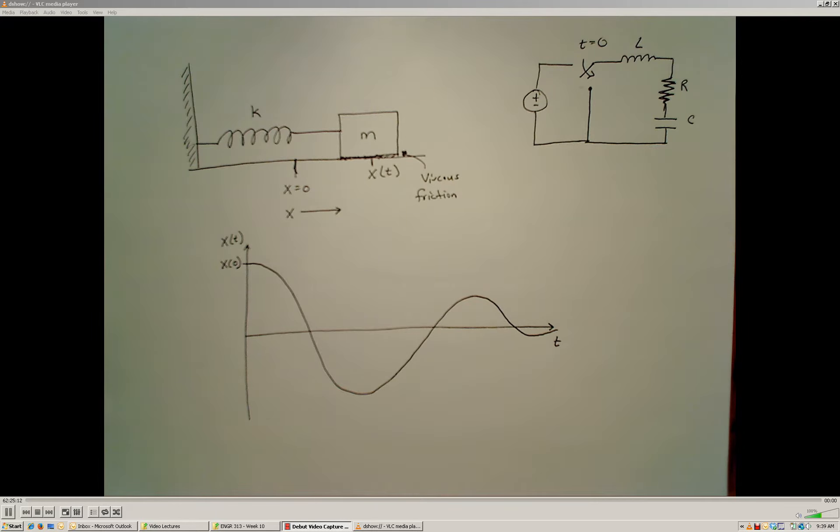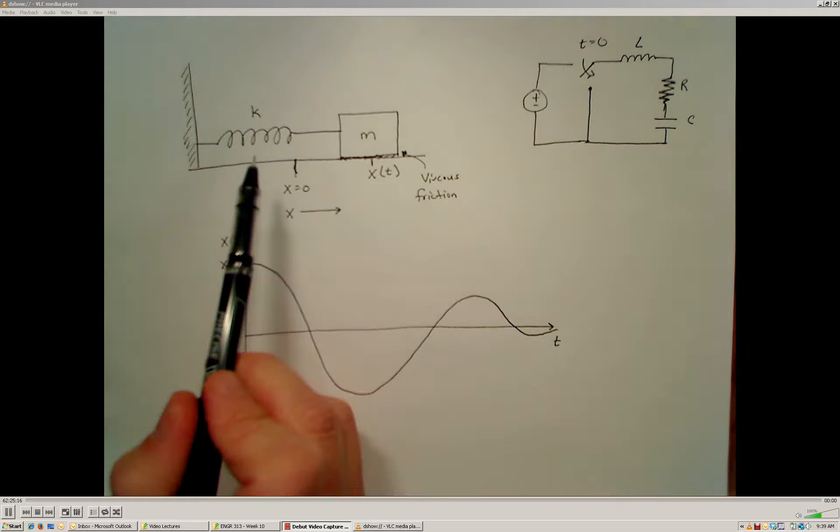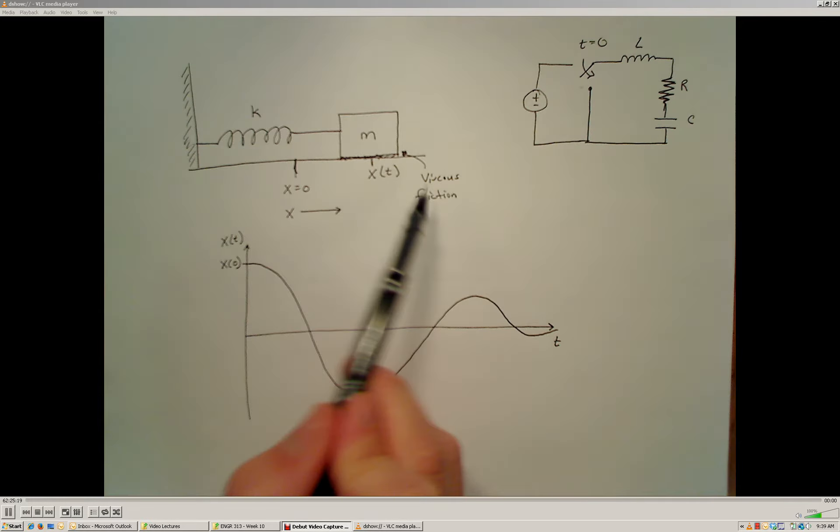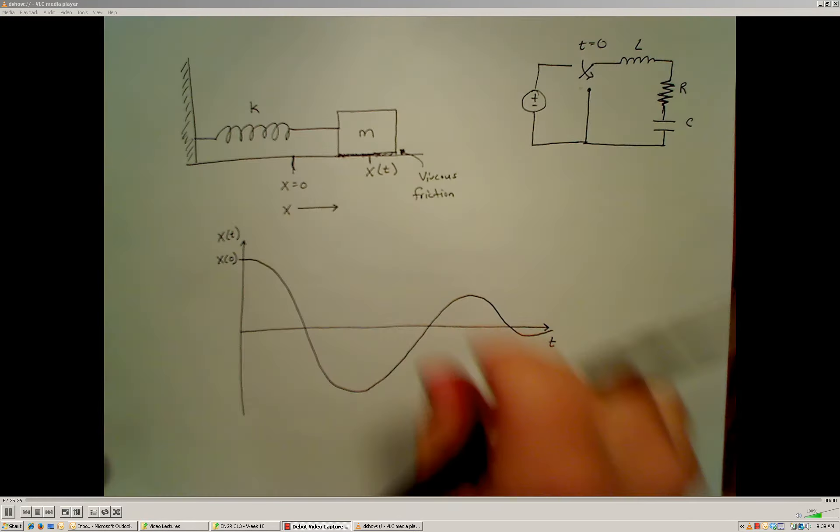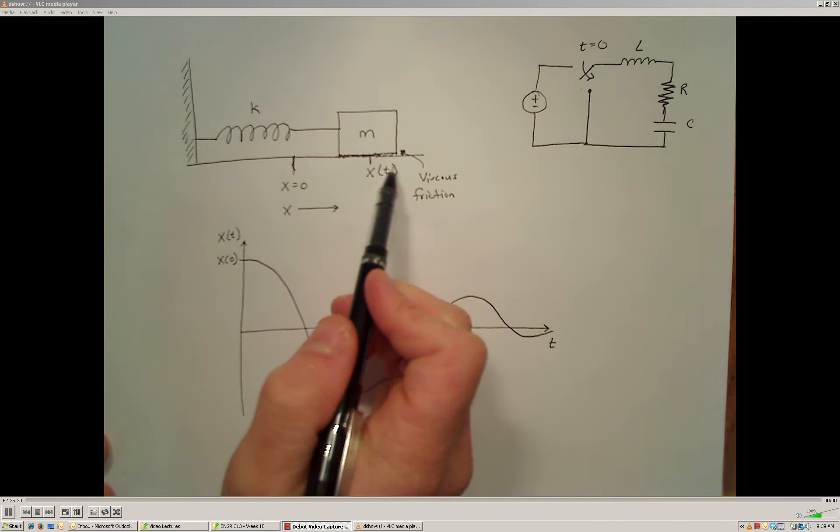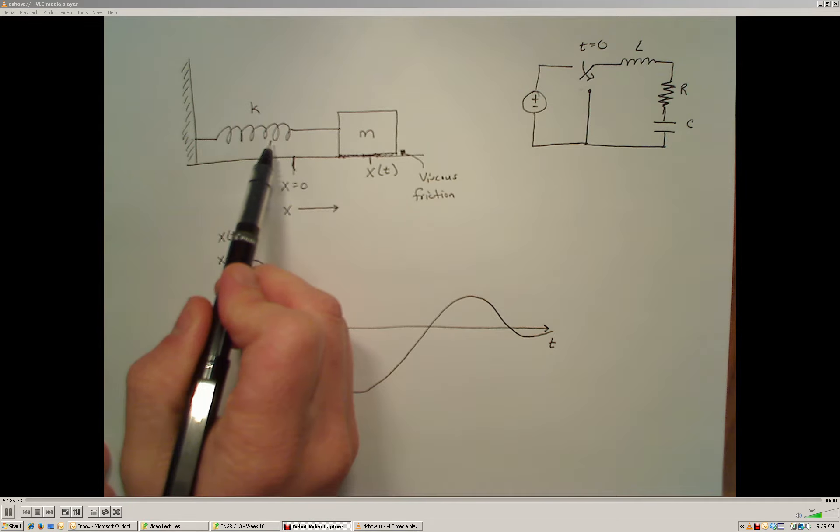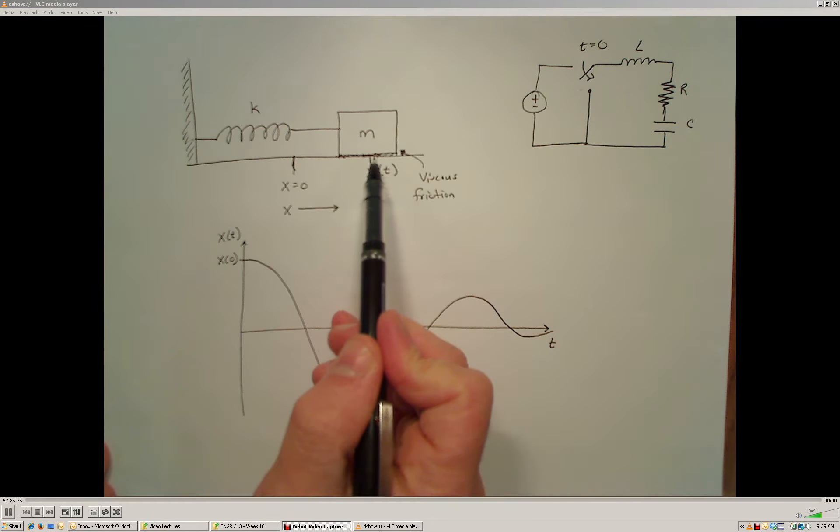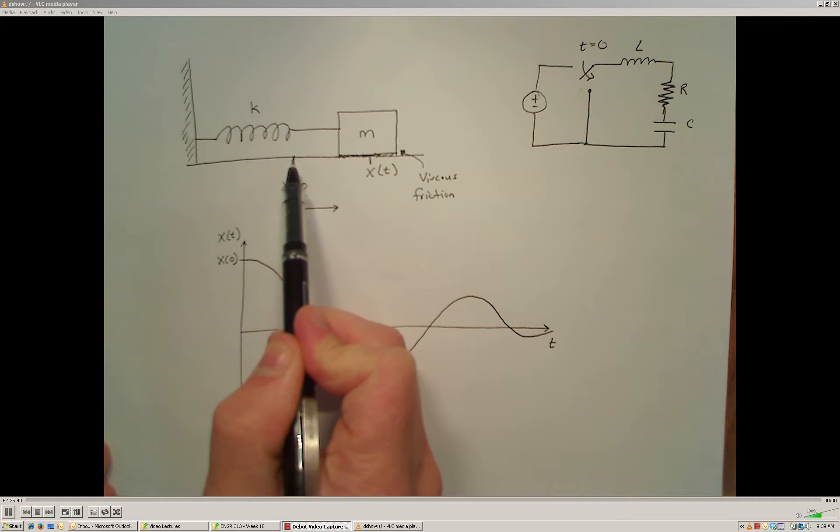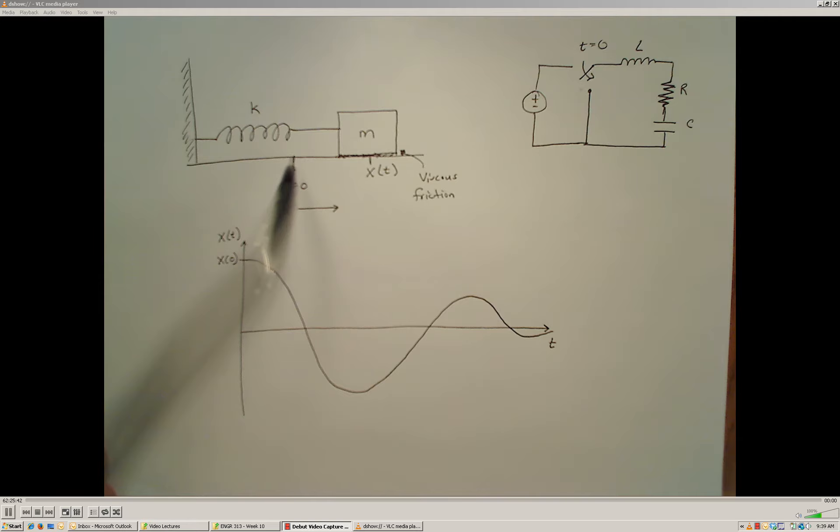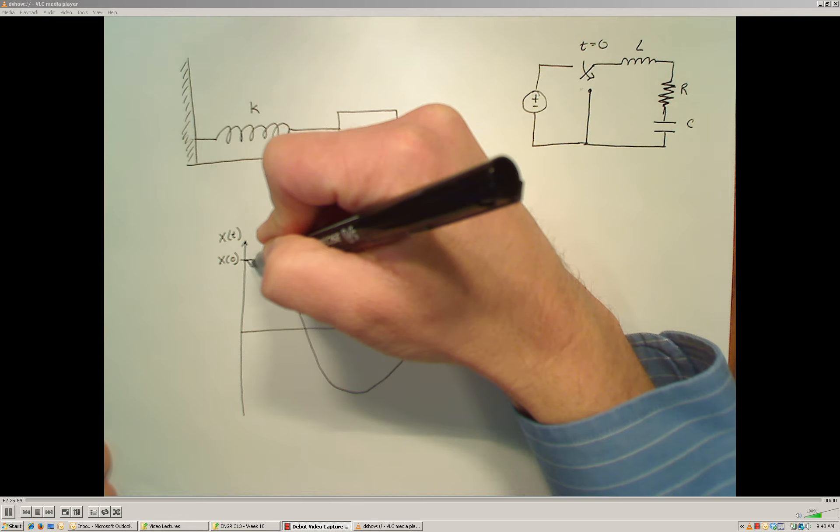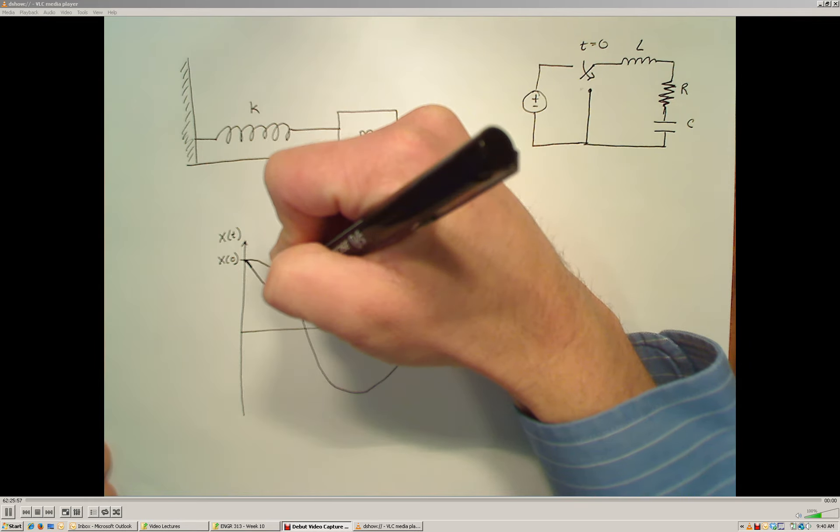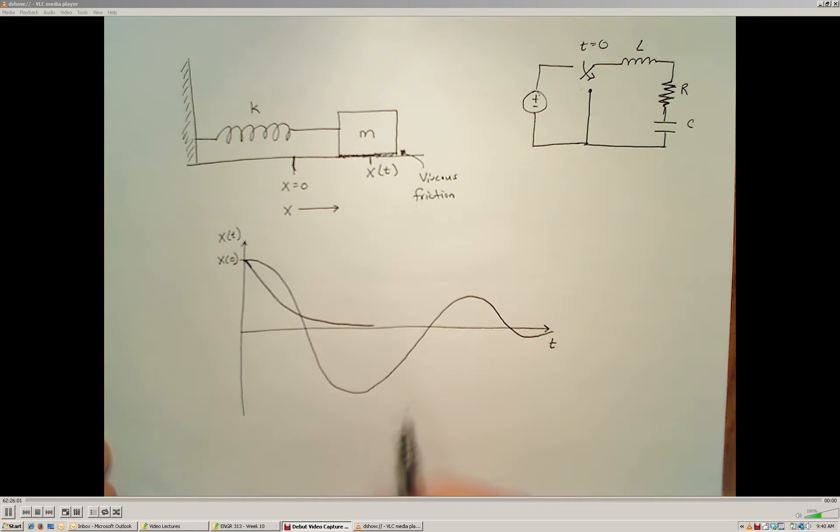There's another case that we have to be aware of for second-order systems, and that's what happens if this spring is very weak or there's a large viscous friction force relative to the mass of the system. If I displace this mass and let it go at time zero, either the friction force is going to be very high or the spring force is going to be very weak, and I can imagine this mass just slowly sliding back to its original position without overshooting the initial equilibrium position. The other response case that we could have for a second-order system starts at the initial position and decreases, sort of exponentially approaching the equilibrium position.